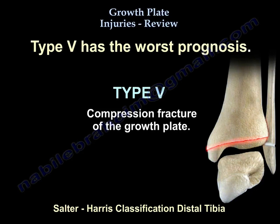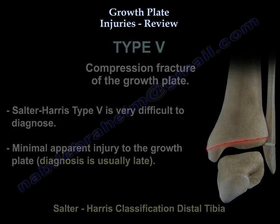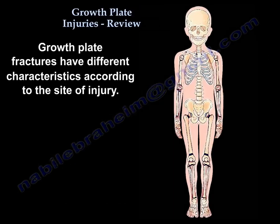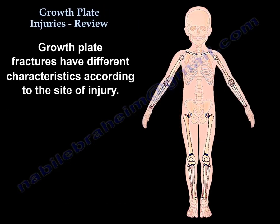Type 5 has the worst prognosis. It is a compression fracture of the growth plate. It is usually very difficult to diagnose, and the diagnosis is usually late. Growth plate fractures have different characteristics according to the site of injury.